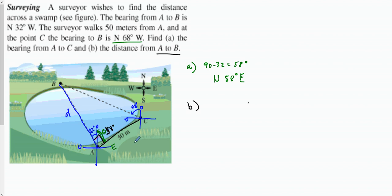Since we know this is 58 degrees, and we also know that these north-south bearing lines are parallel to each other — just at different points — that means certain angles are going to be equal. This is a very involved problem; we have to use some geometry to help us figure it out. Pause the video and try it now if you'd like.